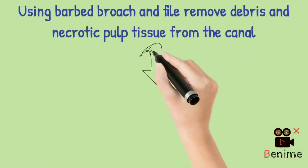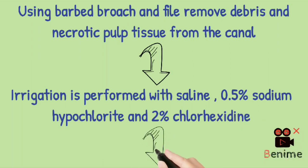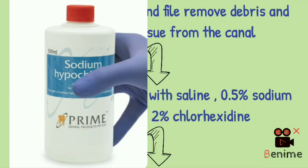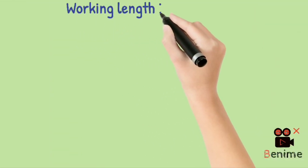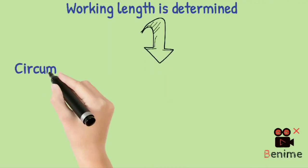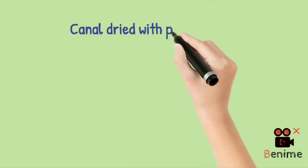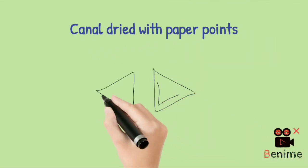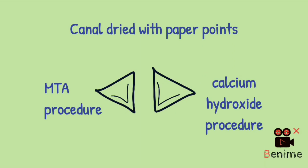Next, remove the pulpal debris and necrotic tissue from the canal using barbed broach or a K-file. Flush out the canal debris with proper irrigation using saline, sodium hypochlorite, and 2% chlorhexidine. After that, you determine the working length by taking a radiograph, which should be at least 2mm short of the radiographic apex of the tooth. Circumferentially enlarge the canal by using sequential file numbers, and then recapitulate in between with saline to remove any infected dentin from the canal walls. Now take a paper point as the size of master file and dry the canal.